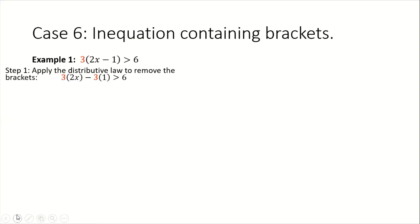As you can see, we have distributed 3 to each term inside of the bracket. We don't need to write a multiplication sign because the bracket implies multiplication. So where I have 3 bracket 2x, that means 3 times 2x, and 3 bracket 1 means 3 times 1. So what we're going to do in our next step is to simplify what we have there.